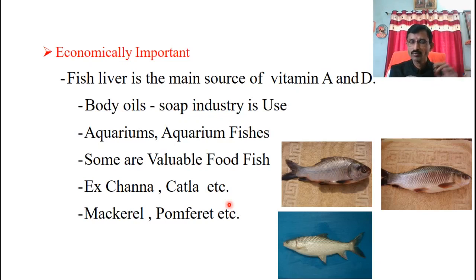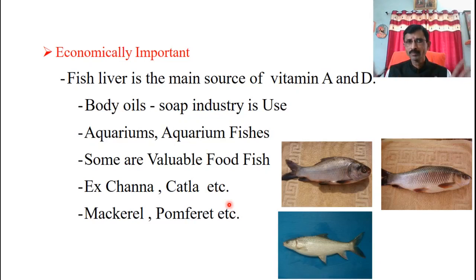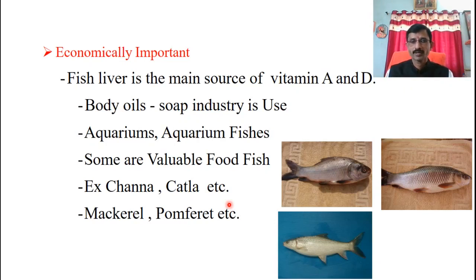Some valuable food fish from fresh water are Channa and Katla - very important and valuable food fish, highly demanded. And examples from marine water are mackerel and pomfret. As per our syllabus, I am giving two examples from fresh water and two from marine water: fresh water - Channa and Katla; marine water - mackerel and pomfret.